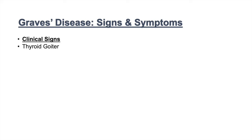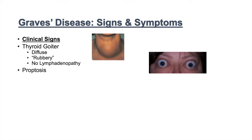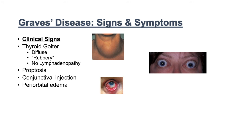Graves' disease also has more specific signs and symptoms related to its etiology. These include a diffuse, rubbery thyroid goiter without lymphadenopathy, as well as proptosis and exophthalmos — a bulging of the eyes. There is also conjunctival injection and periorbital edema, a swelling around the eyes.